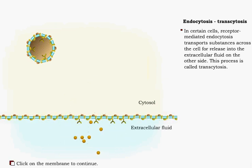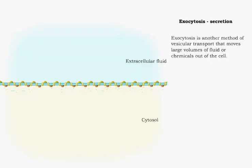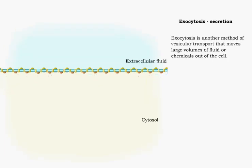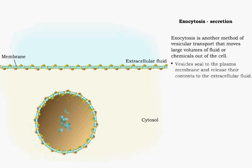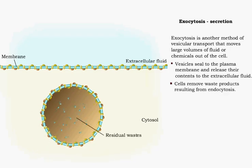Exocytosis is another method of vesicular transport that moves large volumes of fluid or chemicals out of the cell. Vesicles enclosing substances for release seal to plasma membranes, and the contents are exported out of the cell. Exocytosis is the way cells eject waste products resulting from endocytosis.